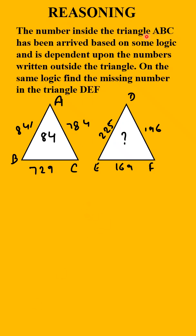This is a reasoning question. The number inside triangle ABC has been arrived based on some logic and is dependent upon the numbers written outside the triangle.